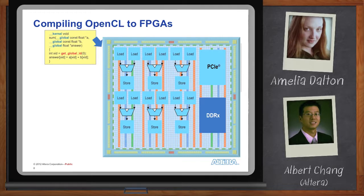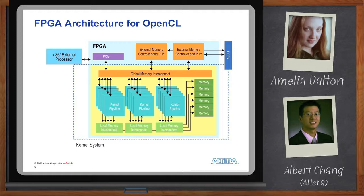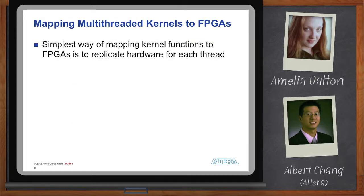Behind the scenes, Altera provides a template for the OpenCL solution. The template consists of a PCIe core, which acts as the communication channel between the processor and your kernel, as well as memory controllers so that your kernels can access external memory — or in OpenCL terminology, global memory. This template not only provides these IP functions but they're already placed and routed so you don't have to worry about it. The Altera-provided compiler also takes your kernel and generates the FPGA logic, which is called the kernel pipeline.